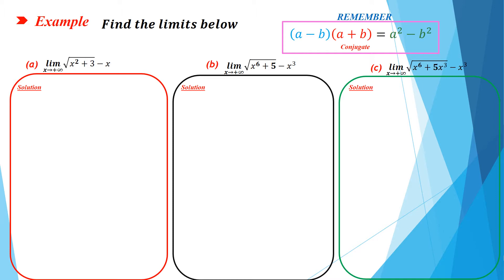So in part a, if we use direct substitution, you will get square root of infinity squared plus three, which is infinity minus infinity. And infinity minus infinity is like zero over zero or infinity over infinity. So you have to do something to find the value of the limit because infinity minus infinity is an indeterminate form.